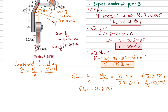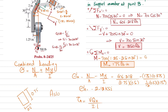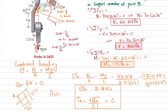Now we find the shear stress at point A using tau equals V times Q-A divided by I times t. Point A is at the outermost fiber of the cross-section. There is no area above point A, so the first moment of area Q-A equals y-bar times A-dash equals zero. Therefore the shear stress at point A equals zero. These are the stress components at point A.